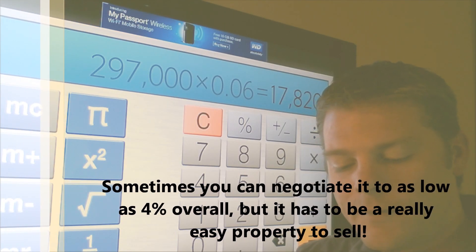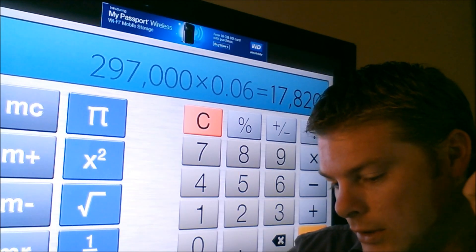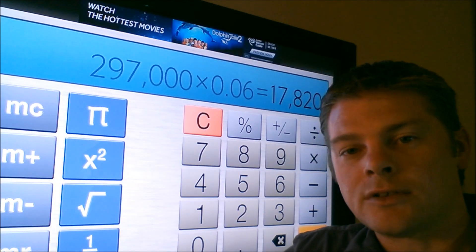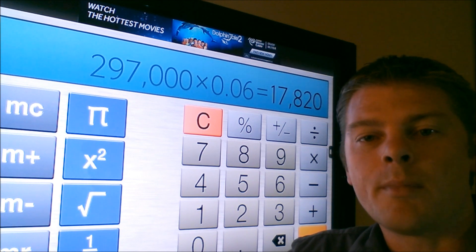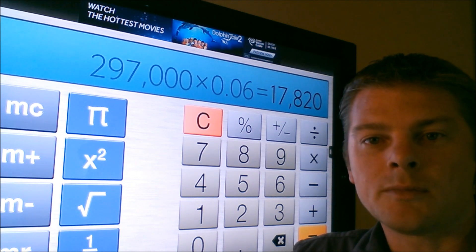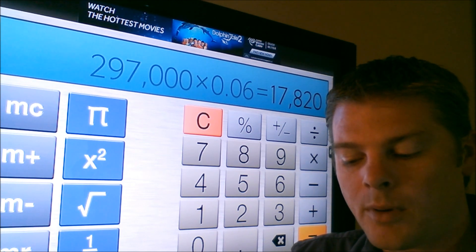So out of that $52,000, you're looking at $35,000 as possible profit minus whatever you have to put in the property to bring it up to that $297,000 property.